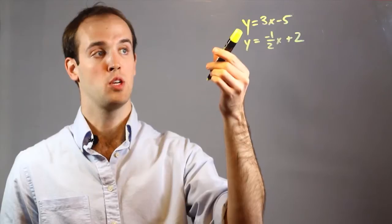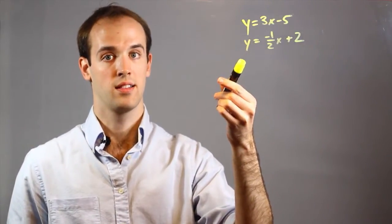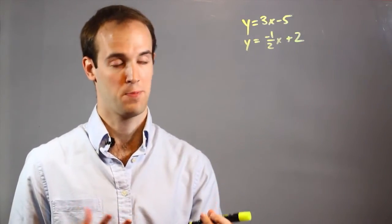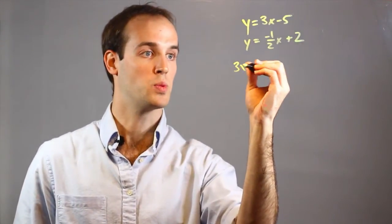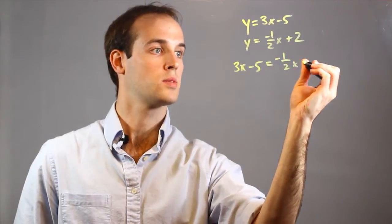Now substitution involves the principle that if both of these things are equal to y, then they must also be equal to each other. So I will set them equal to each other like this. 1 half x plus 2.